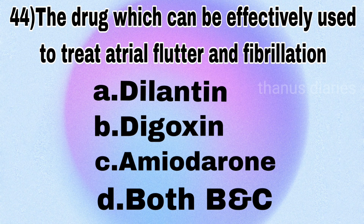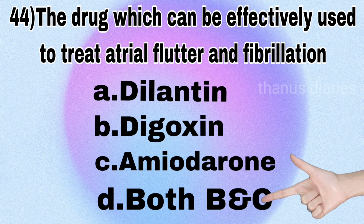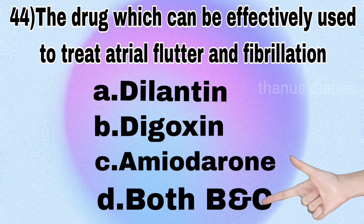Next question: the drug which can be effectively used to treat atrial flutter and fibrillation is — dilantin, digoxin, amiodarone, or both B and C? It's digoxin and amiodarone.